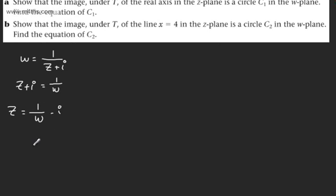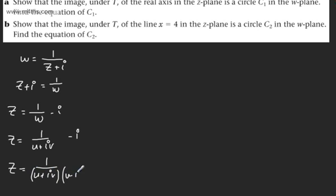Now writing W in terms of U and V, we have Z equals 1 over U plus iV, minus i. We rationalize the denominator by multiplying by the complex conjugate: 1 over U plus iV multiplied by U minus iV over U minus iV, then subtract i. This gives Z equals U minus iV over U squared plus V squared, minus i.